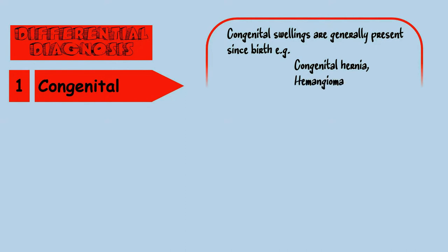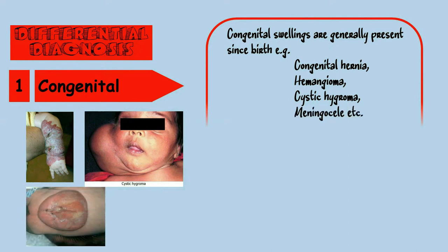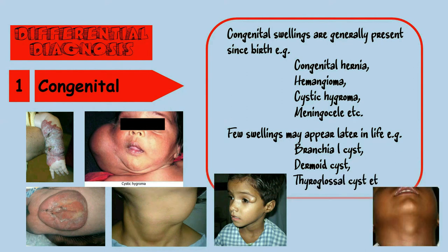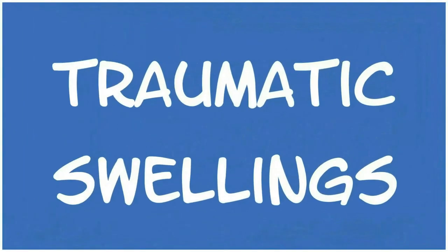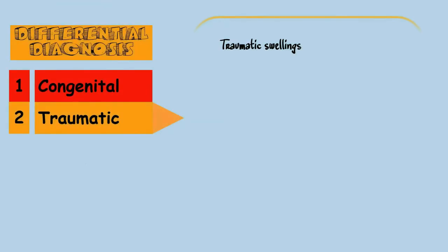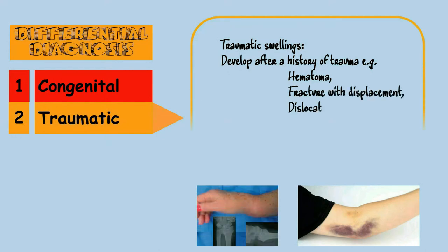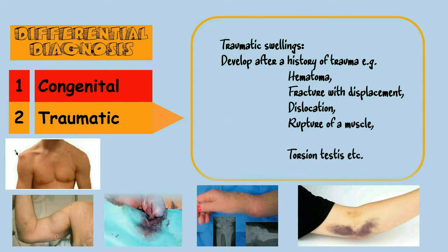Congenital examples include congenital hernia, hemangioma (especially the cavernous type), cystic hygroma, and meningocele. Some congenital swellings may appear later, like glandular cysts, dermoid cysts, and carotid body cysts, although they are present from birth but need time to fill by secretion. As regards traumatic swellings, they usually develop after a history of trauma, like hematoma, fracture with displacement, dislocation, rupture of a muscle; torsion testis is a special traumatic swelling.